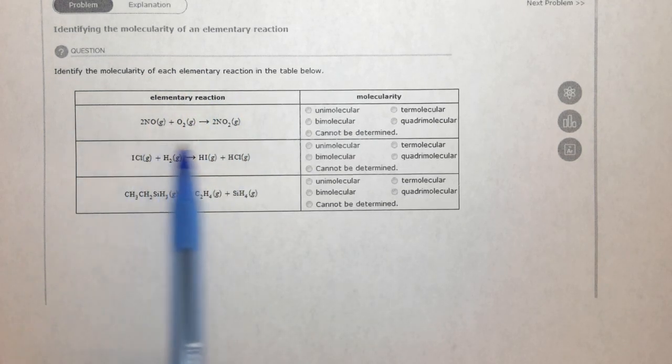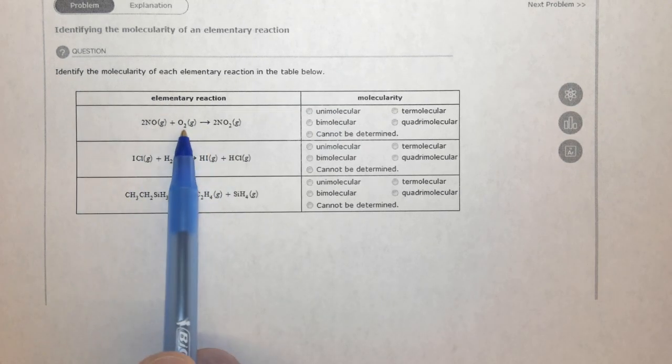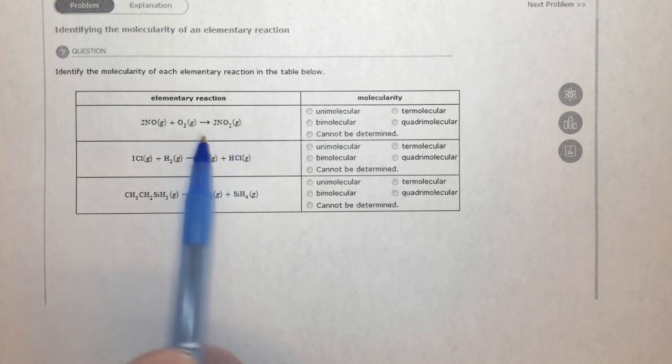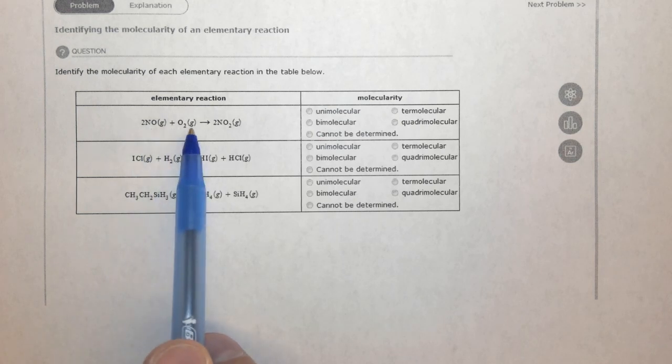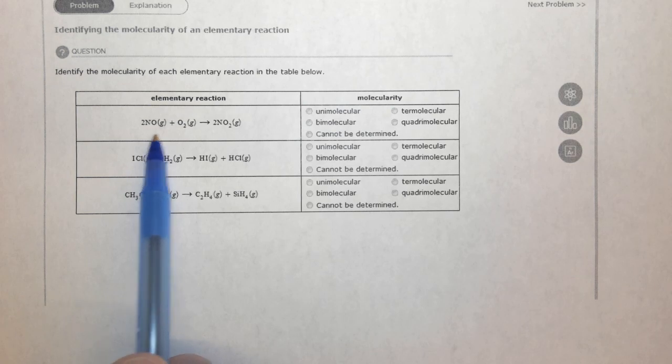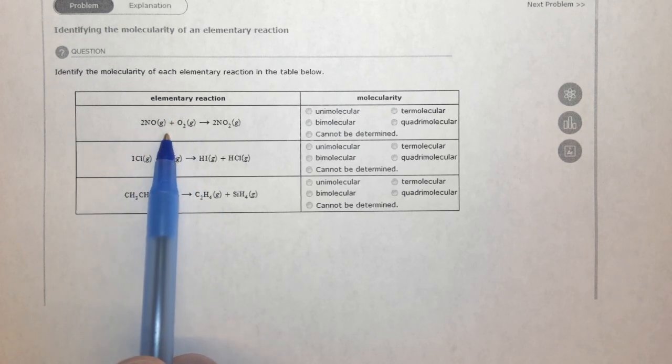So in this particular reaction, it says two NOs interact with one O2 and directly form two NO2s, which means that the two NOs and the O2 must all collide at the exact same time in order for this reaction to occur. Although these reactions are not impossible, they're unlikely because you have to have three things colliding all at the same time.